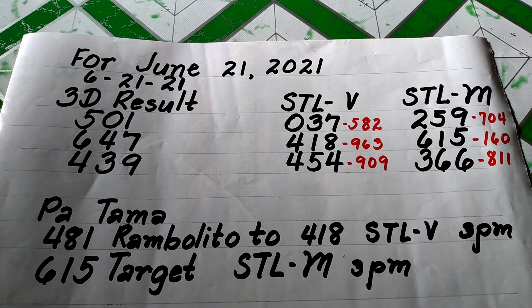Hello mga kaibigan, ngayon ay araw ng lunis, June 21, 2021. Ang 3D result kahapon ay 5-0-1 sa 2pm, 6-4-7 sa 3pm, at saka 4-3-9 sa 9pm.